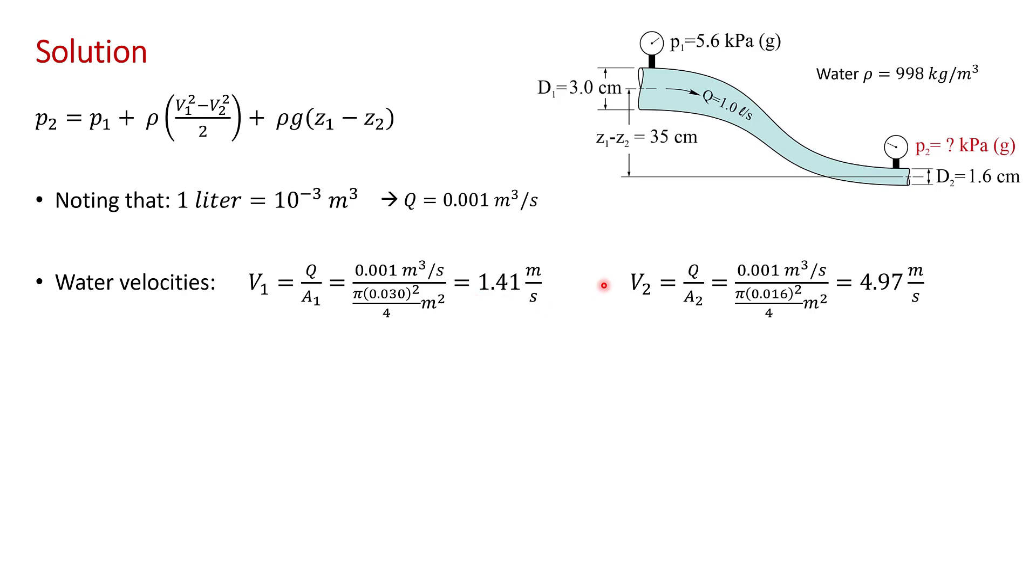And the outlet velocity is the volume flow rate, 0.001 cubic meters per second divided by the cross-sectional area at the outlet, pi D2 squared divided by 4, and that gives almost 5 meters per second.